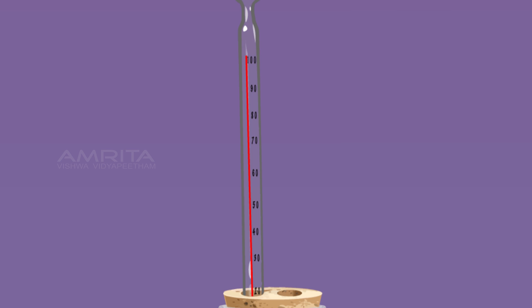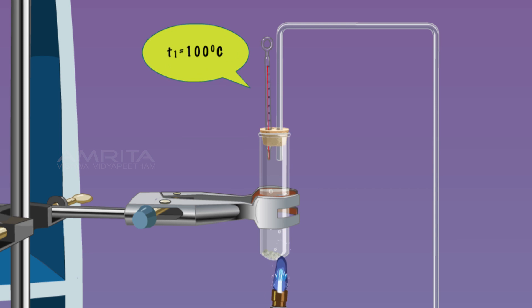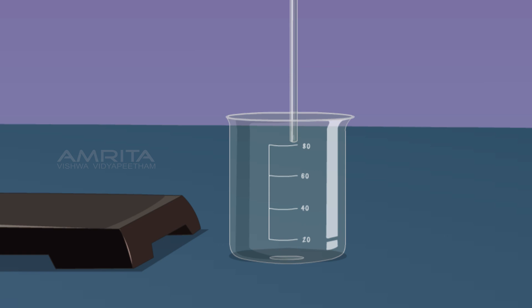On boiling, water is converted into steam which passes through the delivery tube, is condensed and gets collected in the beaker.